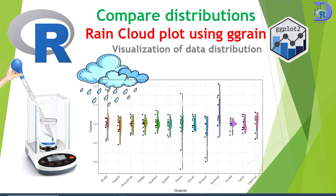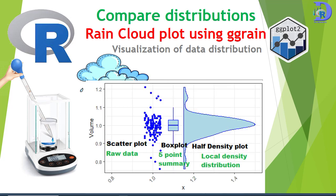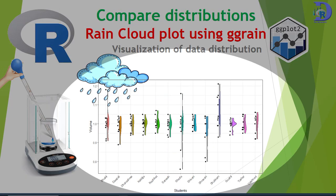Hello friends, welcome to this session of learning R programming. In this session we will see a very elegant plot called the rain cloud plot. This plot is used to show distribution as a density plot, half density plot, along with a box plot to show the five-point summary and distribution of raw data. This is a very elegant plot to compare distribution across different categories in categorical data.